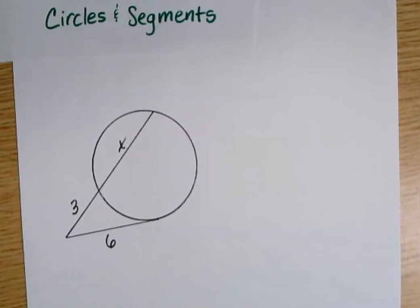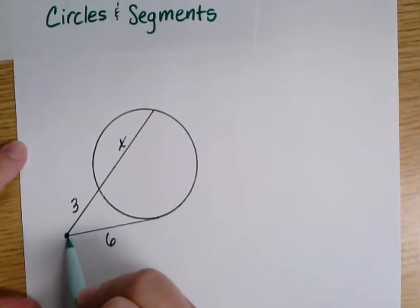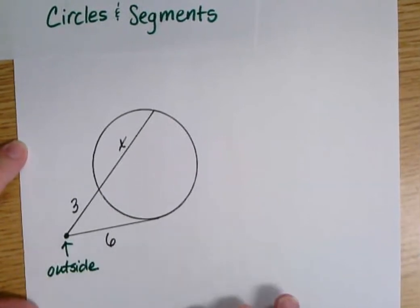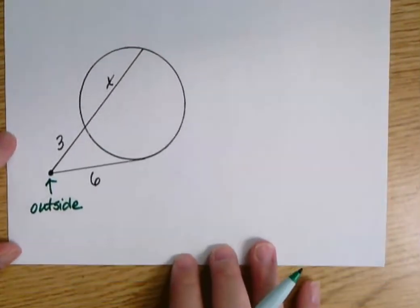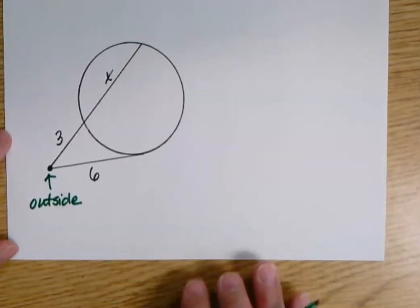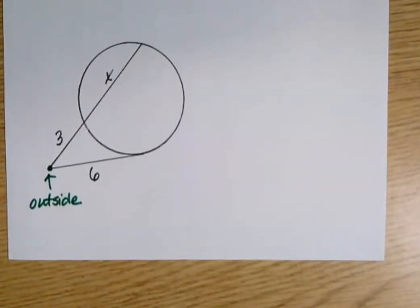And if that's the case, then the way we usually break these apart or categorize them is by where the segments meet. These two segments meet outside the circle. One is a secant, one is a tangent, but I'm not as interested in that as I am about the fact that they meet outside the circle.